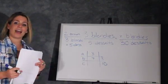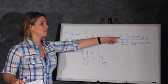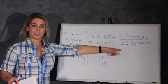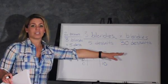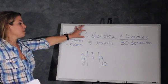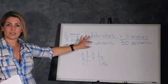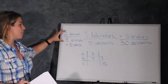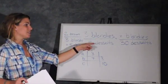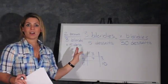So when they're asking us how many blondies there are when we have 30 desserts, we can use the ratio that when we have three blondies, there are five desserts. So that's how we combine the two parts to give us the total when a question asks us about the relationship of a part to the whole.